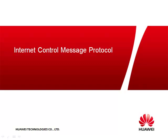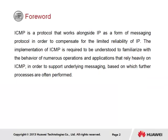We introduce here the Internet Control Message Protocol, or ICMP, and the function of ICMP as a protocol designed to support the smooth operation of IP. ICMP is a protocol that works alongside IP as a form of messaging protocol in order to compensate for the limited reliability of IP. Understanding ICMP is required to familiarize with the behavior of numerous operations and applications that rely heavily on ICMP, in order to support the underlying messaging based on which further processes are often performed.